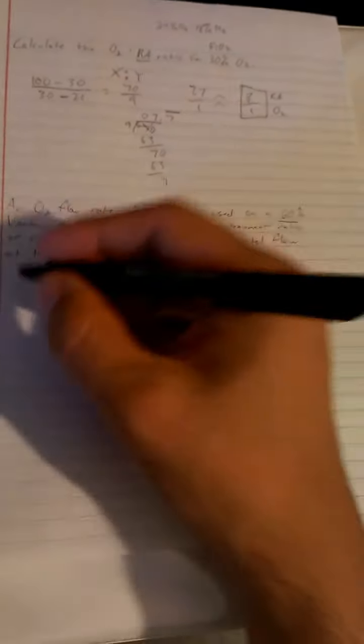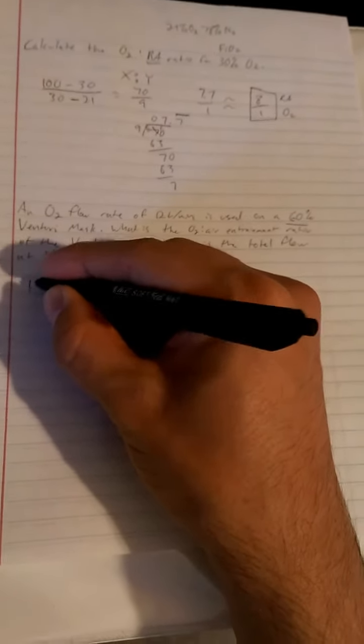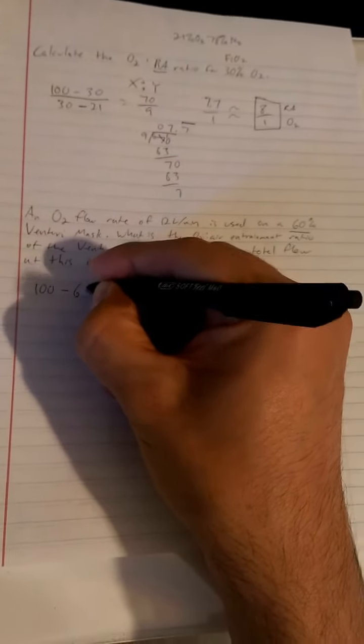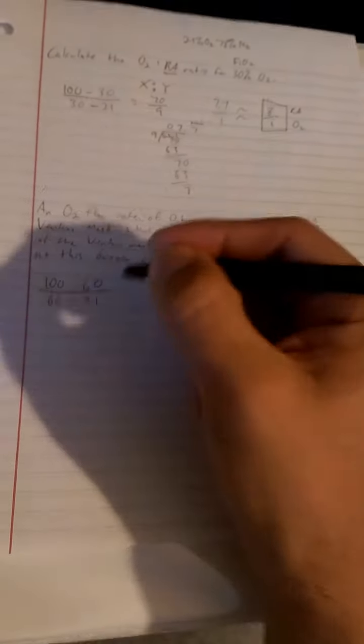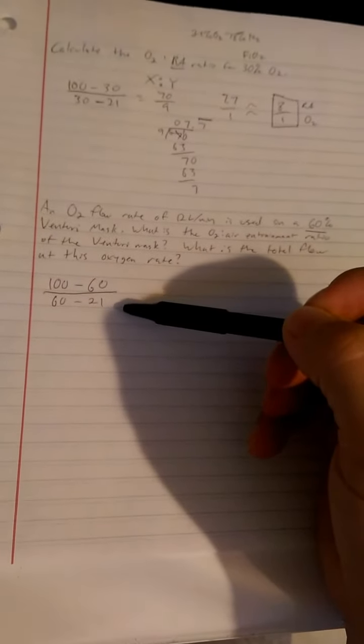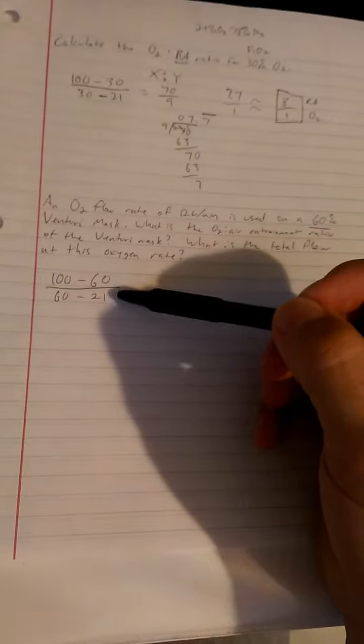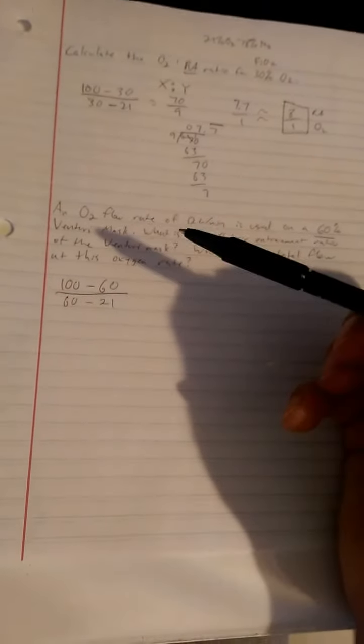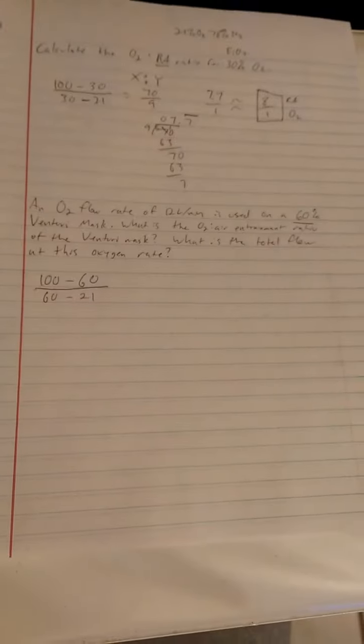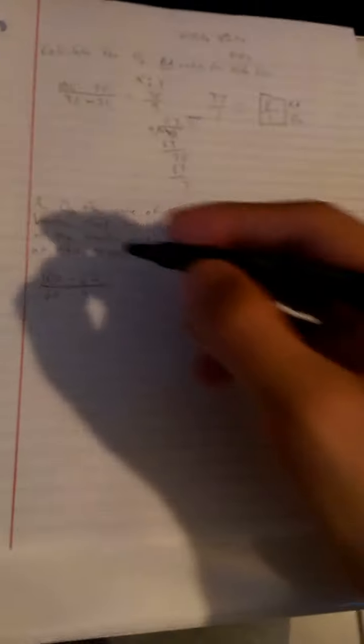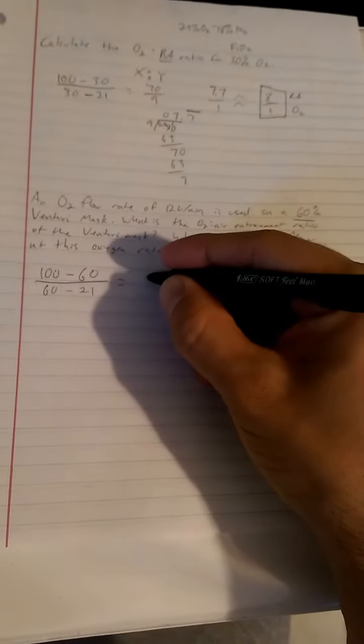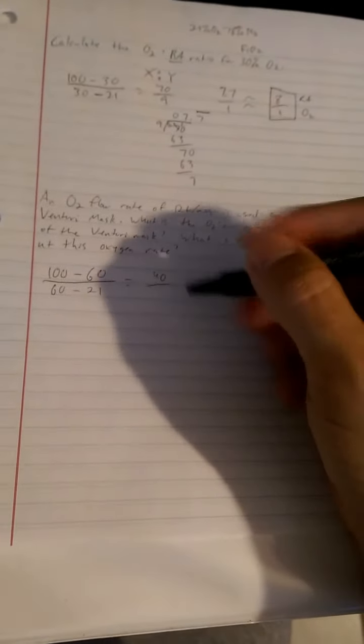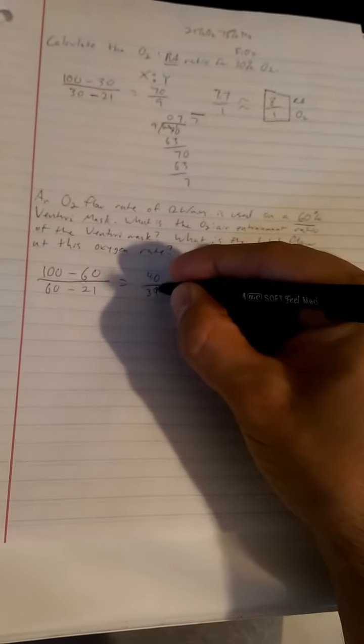In this case, we have a 60% venturi mask, so 60 FiO2, the fraction of inspired oxygen. What do we want to do? We want to take our 100 minus 60 over 60 minus 21. We're going to run into another disparity with that 21, where some texts may say you can use 20 depending on the FiO2. I always just use 21 because I feel like it's kind of common sense when you see the outcome.